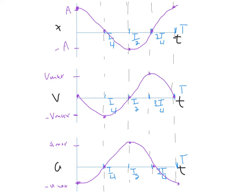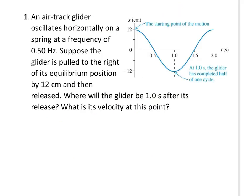You need to know what these graphs look like and understand why they look the way they do. Conceptually, understand what the object is doing at each point. If you're looking at more than one period, it just keeps repeating — that's what makes it sinusoidal. Let's do two quick examples. The first tells us that an air track glider oscillates horizontally on a spring at a frequency of 0.5 hertz.